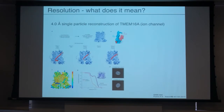Perhaps if they collected 10 times more data and used more powerful classification algorithms, they might be able to sort out different states and get higher resolution rather than one mix of all these states. At some point, the question you're trying to address limits what you're actually doing. If you need 3 angstrom information to look at a binding site, then 4 angstroms might be insufficient — but if you're just trying to understand the overall fold for the first time, it might be sufficient.